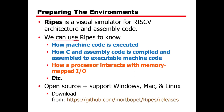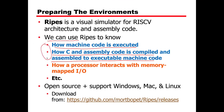We can use RIPES to understand how machine code is executed, how C and assembly code is compiled and assembled into executable machine code. We already learned this in the previous week, and here we will see how a processor interacts with the memory map and I/O devices.